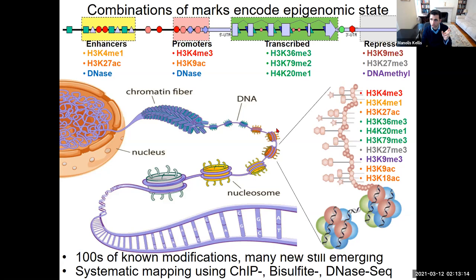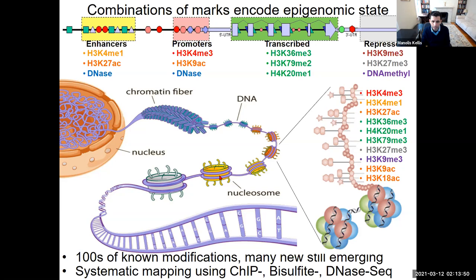You have roughly two loops around each nucleosome with about 150 base pairs and a 50 base pair linker, so DNA can be thought of as having 200 base pair packaging units decorated with different histone modifications. A nucleosome is one of these little beads in a 'beads on a string' view of DNA, visualized with microscopes for decades.